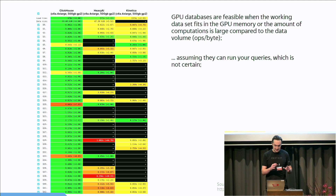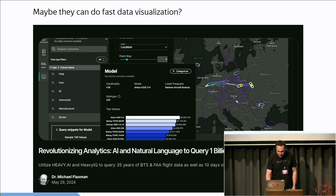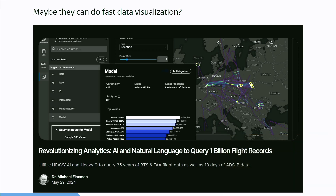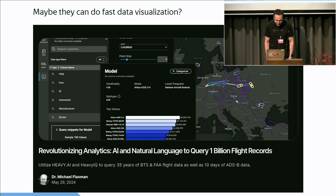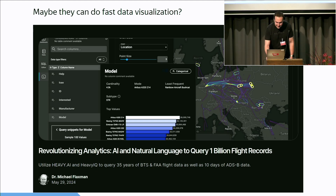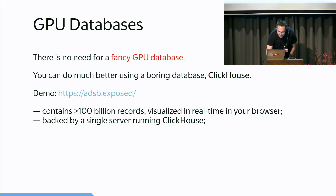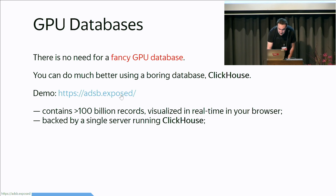In theory they could provide some benefits in very narrow cases when the amount of computation is significantly large compared to the amount of data processed. Maybe they are good at providing some visualizations. But I can just make something as impressive using my favorite database — ClickHouse. I implemented a website allowing you to explore not 1 billion records but 100 billion records in real time in the browser.